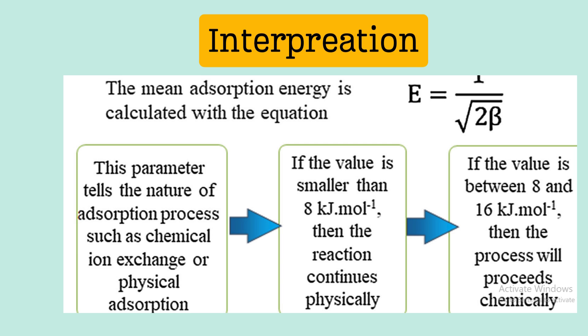Now, the interpretation. Actually DR isotherm is used to calculate the adsorption energy E. Adsorption energy E is calculated from beta, which is E equal to 1 divided by root over twice beta. Putting the value of beta, you can easily calculate adsorption energy E.